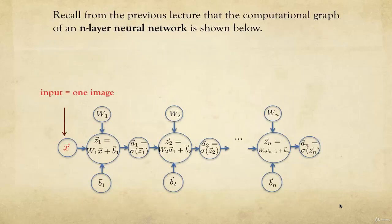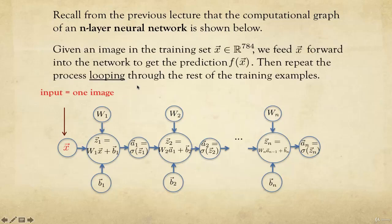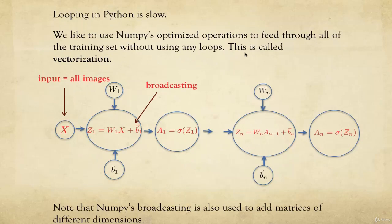Vectorization. From the previous lecture, we talked about an n-layer neural network where we send an image x forward by applying affine functions and sigmoid n times. If we loop through all training images individually, looping in Python is slow. We want to use NumPy's optimized matrix operations to feed forward all the training set without any loops — this is called vectorization. We take advantage of the NumPy linear algebra library.